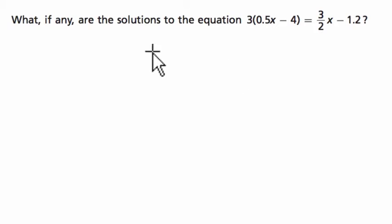Okay, so the first thing I'm going to do is just rewrite it. So this helps me get a sense of what I'm dealing with. 3 times a half of x, minus 4 equals 3 halves of x minus 1.2.